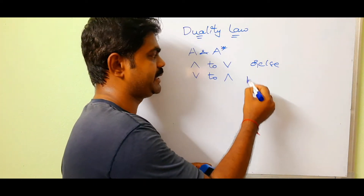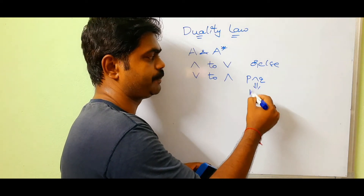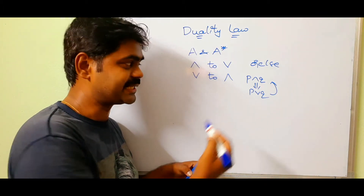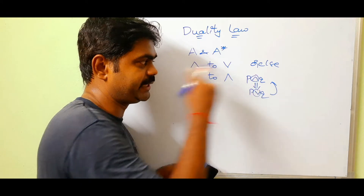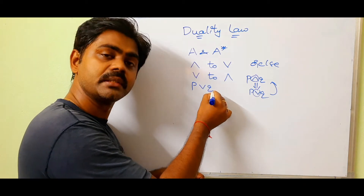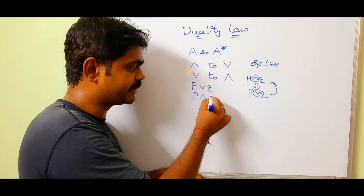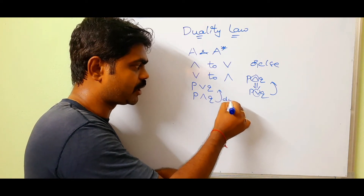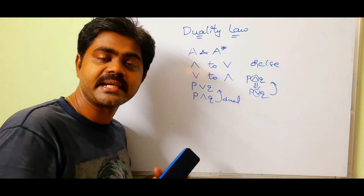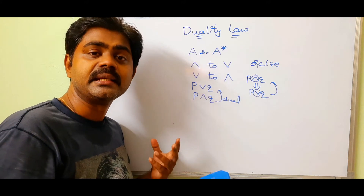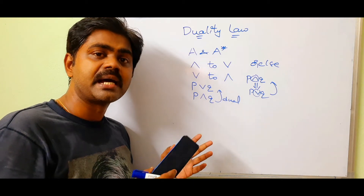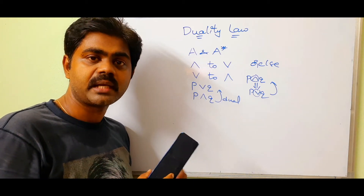For example, if I have P AND Q and change it to P OR Q, so this one is dual to this one. Simply changing the symbol from AND to OR. If I have P OR Q, it is changed to AND. So P AND Q is dual to P OR Q. Two formulas A and A star are said to be dual to each other if and only if one can be obtained from the other by changing AND to OR or OR to AND.